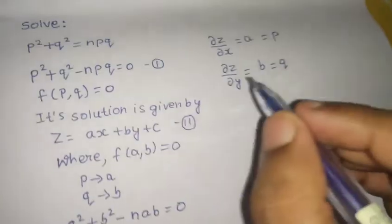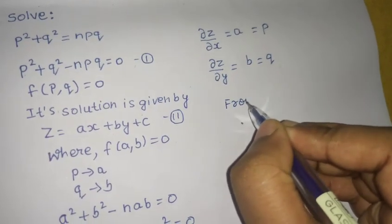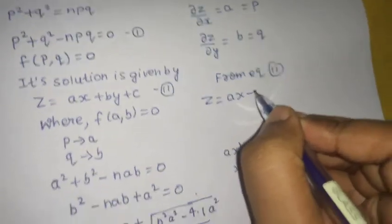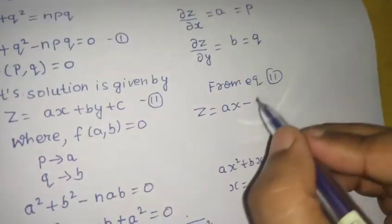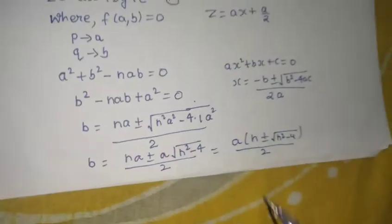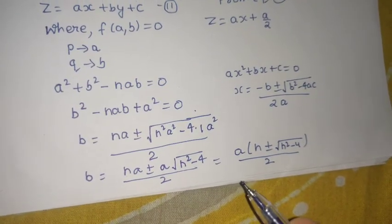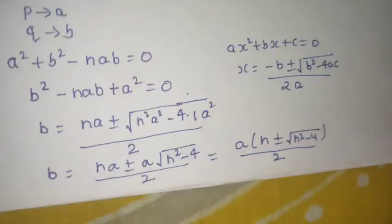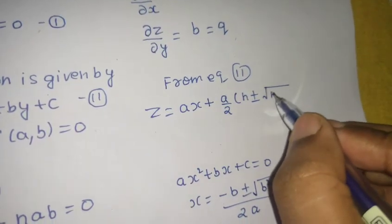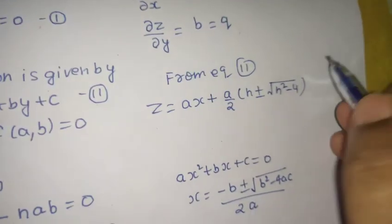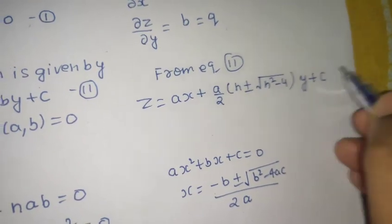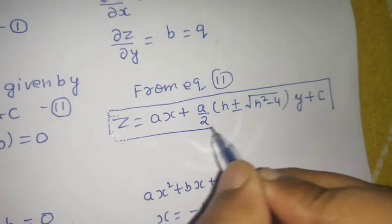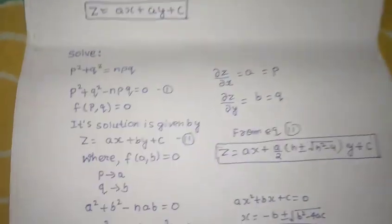Finally, I can write from equation number 2: Z equals to AX plus in place of B I can write A by 2 times N plus minus under root N square minus 4, times Y plus C. That's it.